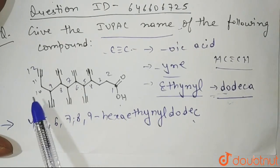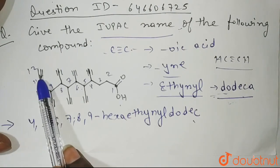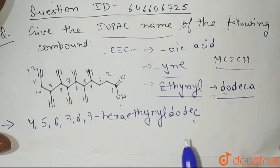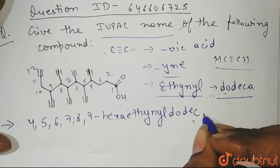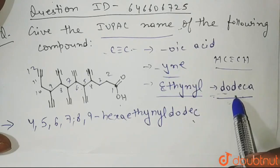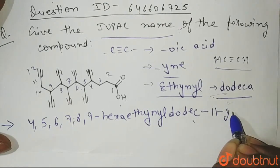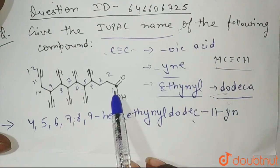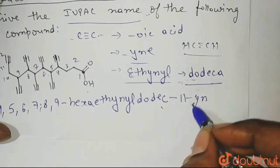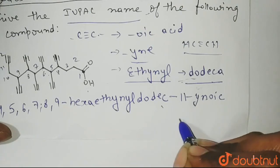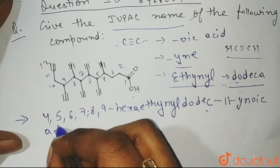So dodeca. But at carbon number 11 also, we have a triple bond, right? So the suffix you use will be yn. So you will write dodeca. A will not be written because we have to write yn, right? So you will write dodeca, 11, yn, and then at carbon number 1, oic acid. That means carboxylic acid was present. So you will write yn, oic, acid.